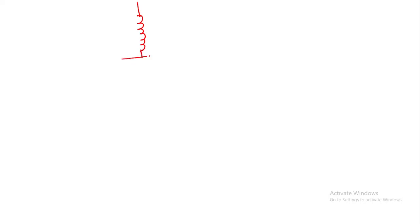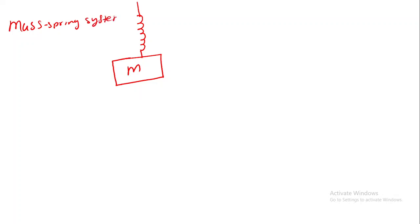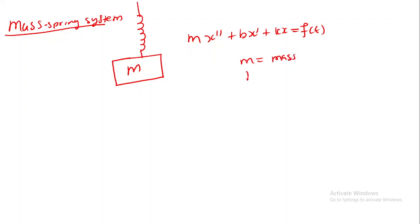Let's say you are having a spring with mass m — we call this a mass-spring system. A mass-spring system is governed by mx'' + bx' + kx = f(t), where m represents the mass, b represents the damping constant, and k represents the spring constant.